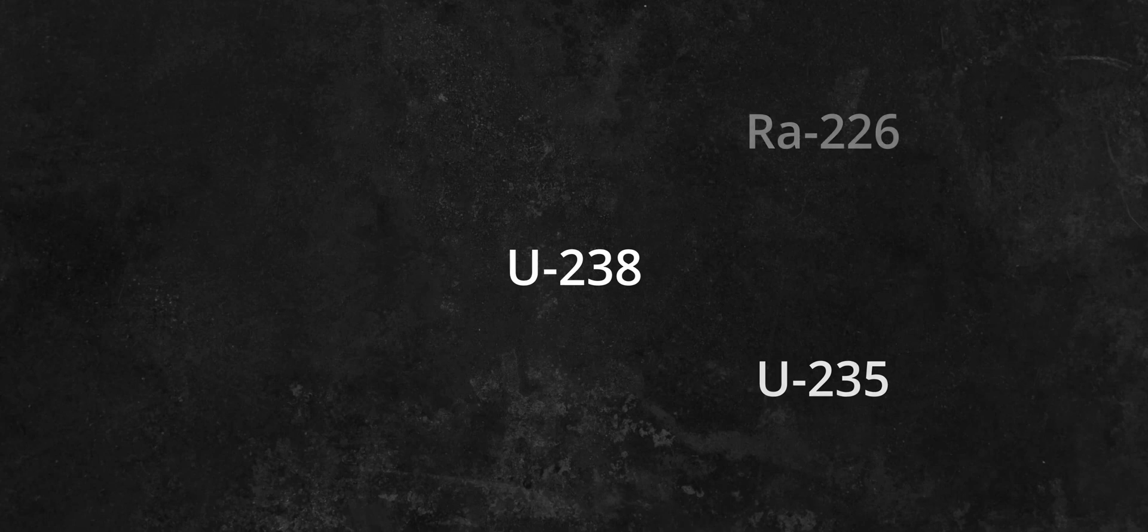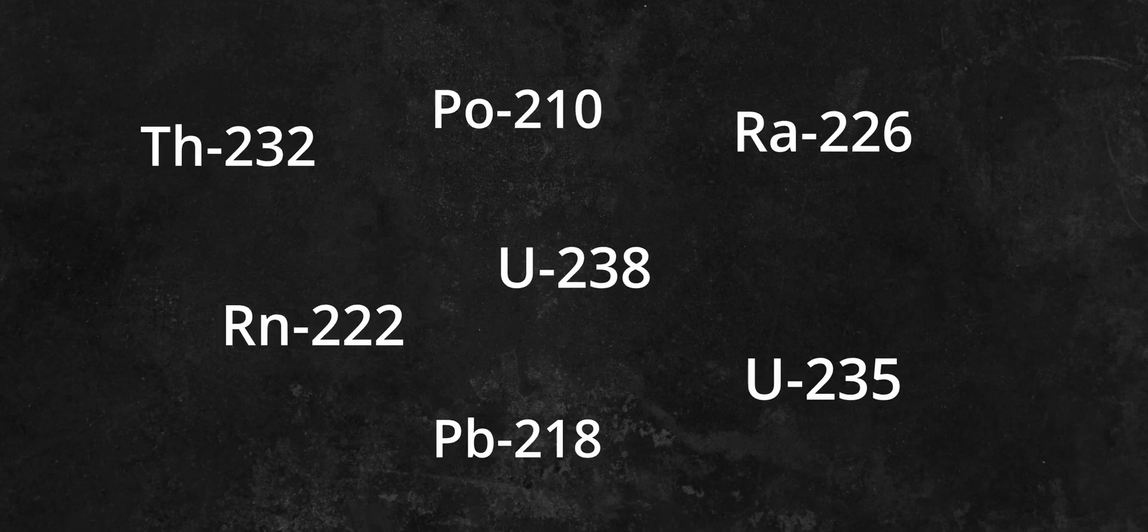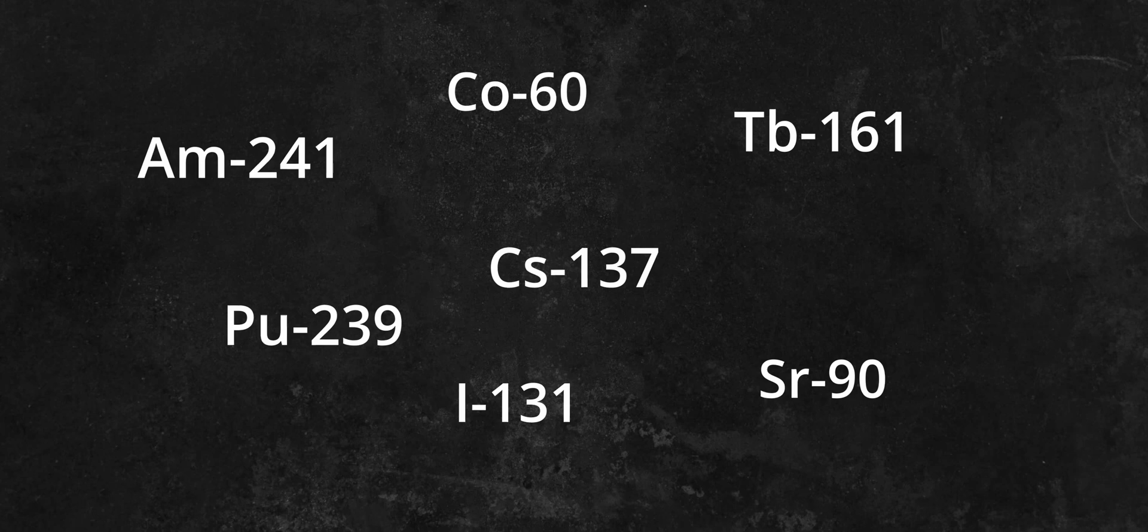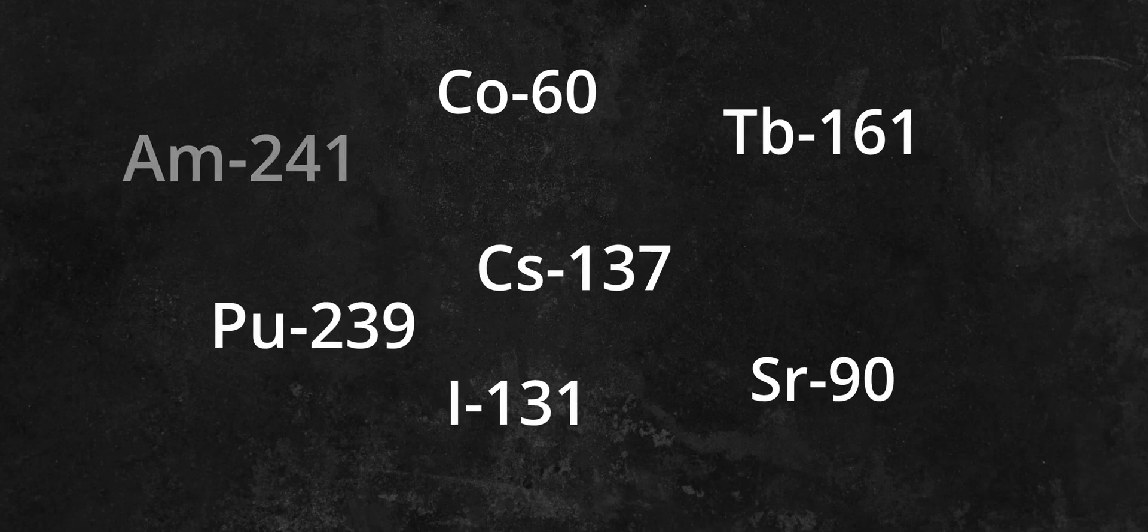There are plenty of different radioactive isotopes out there. Some of them are natural such as uranium, thorium and their decay products, and some of them are man-made, produced in nuclear reactors, particle accelerators, or during atomic tests.